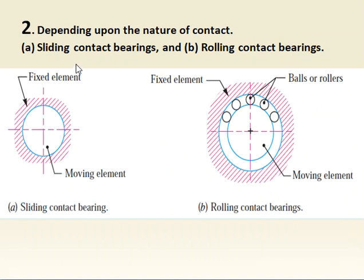The second classification is by the nature of contact. In a sliding contact bearing, the fixed and moving elements have direct surface-to-surface contact with no balls or rollers between them. In a rolling contact bearing, rollers or balls are present between the fixed element and the moving element.